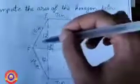Compute the area of the hexagon below. The hexagon has six sides. Here AB equals 7 cm, ED equals 7 cm, EF equals 15 cm, AF equals 15 cm, CD equals 15 cm, BC equals 15 cm, AE equals 24 cm, and BD equals 24 cm. We draw a perpendicular FM to AE, where EM equals 12 cm and AM equals 12 cm.